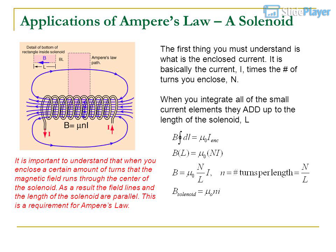When you integrate all of the small current elements, they add up to the length of the solenoid, L. It is important to understand that when you enclose a certain amount of turns, the magnetic field runs through the center of the solenoid. As a result, the field lines and the length of the solenoid are parallel. This is a requirement for Ampere's law.